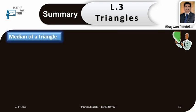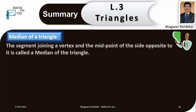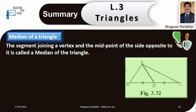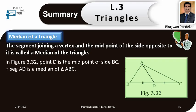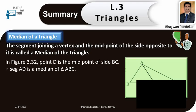Median of a triangle: the segment joining a vertex and the midpoint of the side opposite to it is called a median of the triangle. Observing this figure, in the figure, point D is the midpoint of side BC. Therefore, segment AD is a median of triangle ABC.